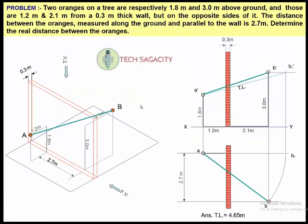Two oranges on a tree are respectively 1.8 meters and 3 meters above the ground, and those are 1.2 meters and 2.1 meters from a 0.3-meter-thick wall but on the opposite sides of it. The distance between the oranges measured along the ground and parallel to the wall is 2.7 meters. Determine the real distance between the oranges.